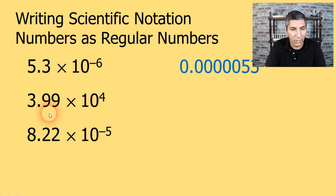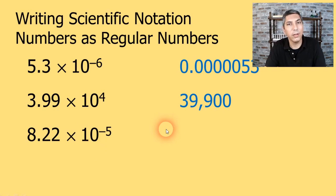Now the next number, 3.99 times 10 to the fourth, that's a large number because we have a positive exponent. So we move the decimal point over in the other direction, 399, and then we have two more places to go. So we need some zeros as placeholders. So that would be 39,900.